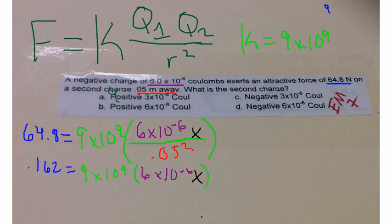We multiply the 0.05 squared over 64.8, and we will have 0.162 equals 9 times 10 to the 9, parenthesis 6 times 10 to the negative 6, X.